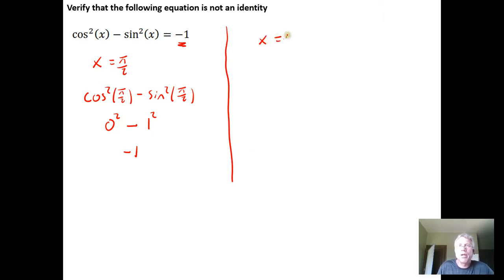So if we plug in x equal to zero, what do we get? We get cosine squared of zero minus sine squared of zero. And the cosine of zero is one, so this is going to be one squared minus the sine of zero is zero. So we get one squared minus zero squared is a positive one. And that doesn't equal negative one.